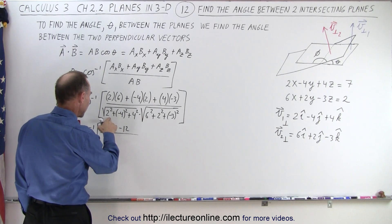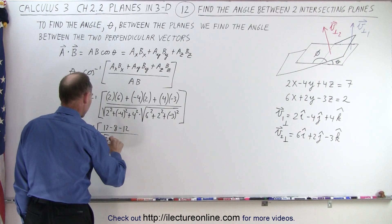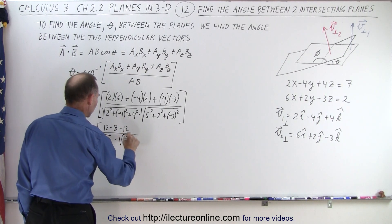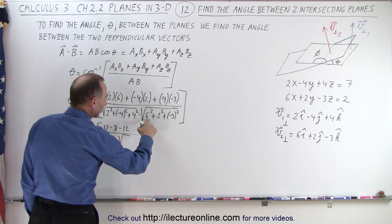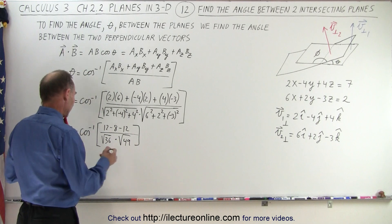So we can take that as a negative value, and here we get that 16 plus 16, that's 32 plus 4, that's the square root of 36, times the square root of 36, 40, 49.